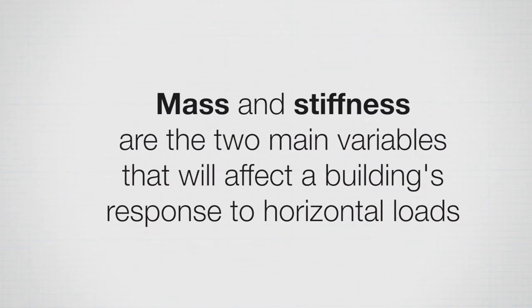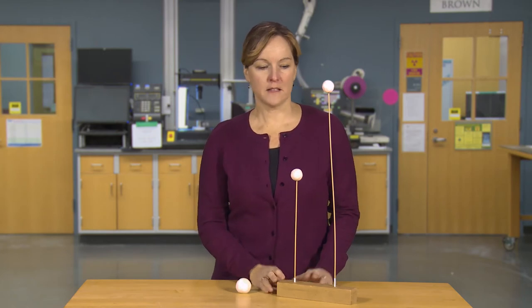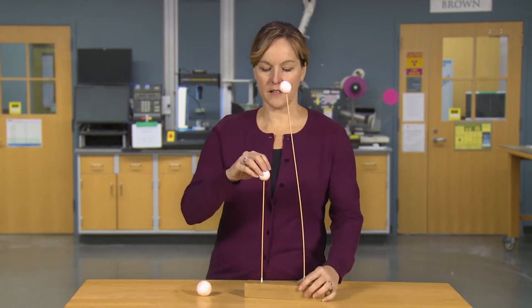The two main things that will affect the response of a building are the mass and the stiffness. In this case, we modeled stiffness as changes in height, and then we had a lump of clay representing the mass of the building. So what happened? Let's see if we can experiment and see what happened.